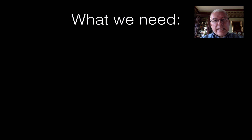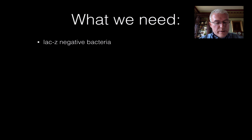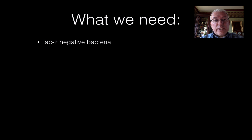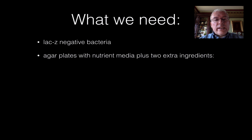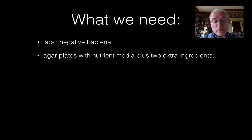In order to do this, we're going to need a basic list of supplies. We're going to need some living bacteria — in this case, E. coli bacteria that are negative for a gene called LAC-Z, meaning these E. coli bacteria do not have the ability to digest lactose. We're also going to need some agar plates to grow the bacteria on. These plates will contain basic nutrient media with all the vitamins, minerals, and glucose that bacteria need to grow, plus two special ingredients.